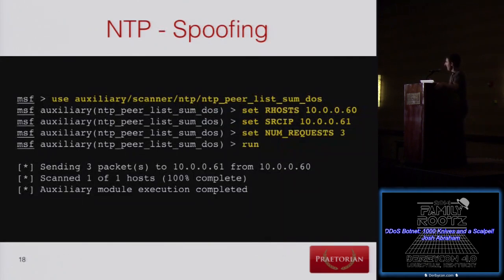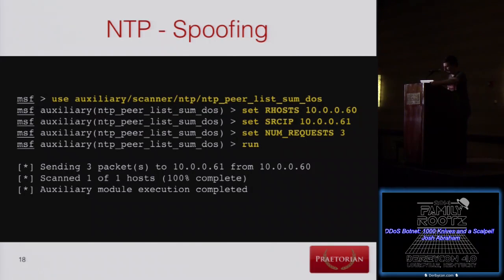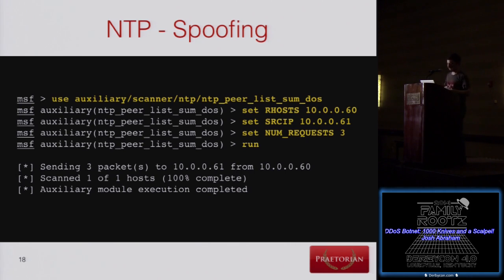I took all the different modules in Metasploit and modified everything to support spoofing — it was a quick change to one of the mixins. You just set the source IP to the system you want to target, and the RHOST is the vulnerable internet system. When you send the request, it says 'respond to .61' and that system gets flooded. This basic use case applies to all the Metasploit modules I modified.